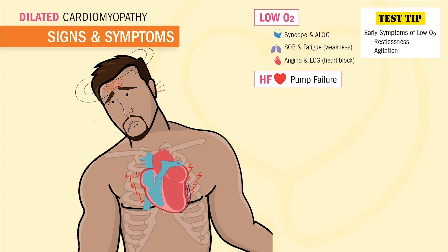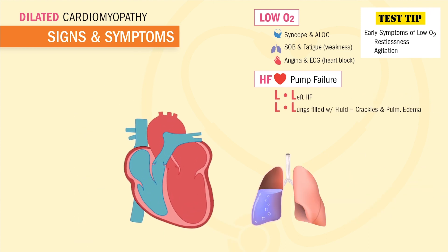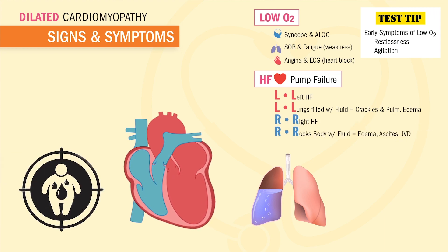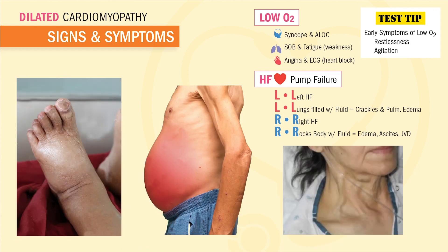In heart failure, blood fails to pump forward and starts to back up in the body or the lungs. If blood backs up on the left side of the heart — L for left means L for lungs — we hear wet crackles known as pulmonary edema. R for right-sided heart failure means it rocks the body with fluid, so we'll see a swollen body with edema, ascites, and even JVD — jugular vein distension.